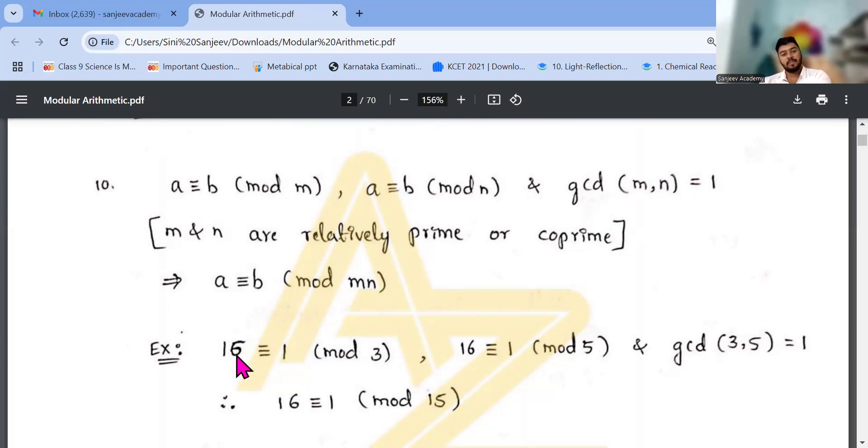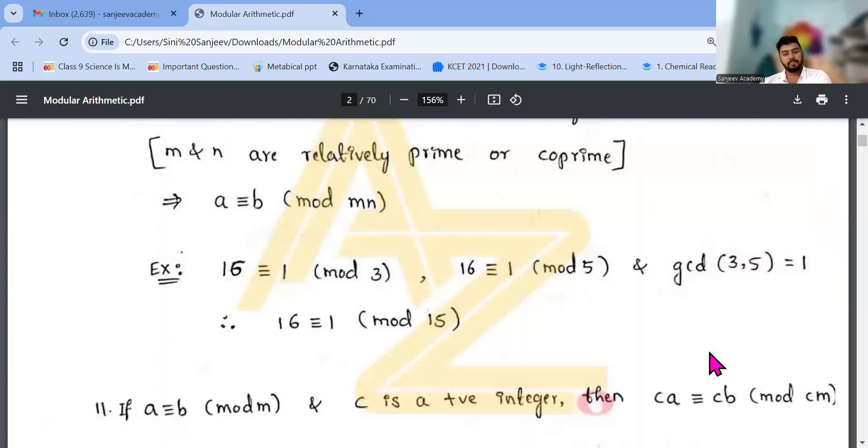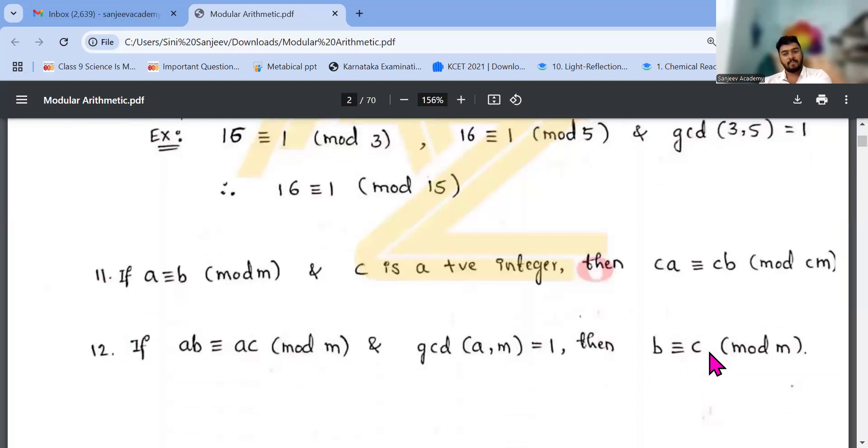So example is, they give 15 congruent 1 mod 3, gcd 3 and 15 is 1, coprime. 3 and 5, both are prime and are also coprime. If c is a positive integer, then ca congruent to cb mod cm. Then if ab congruent to ac mod m, and gcd of a comma m equals 1, then b congruent to c mod m.